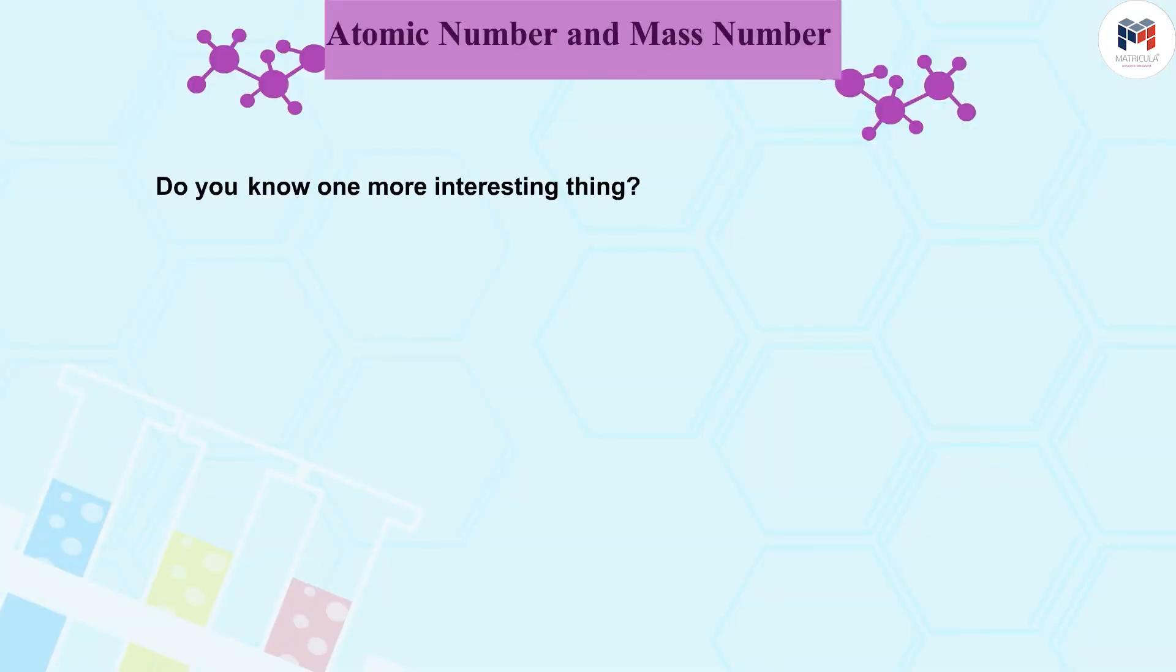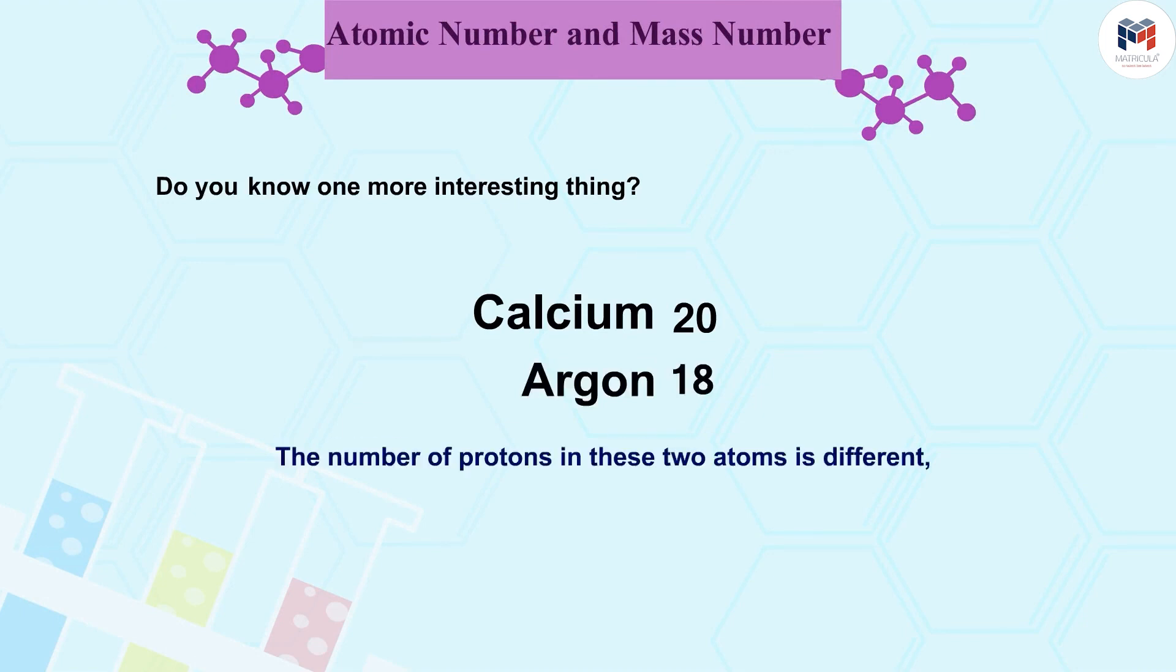Do you know one more interesting thing? Let us consider two elements, calcium, atomic number 20 and argon, atomic number 18. The number of protons in these two atoms is different, but the mass number of both elements is 40.